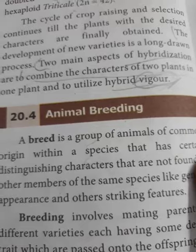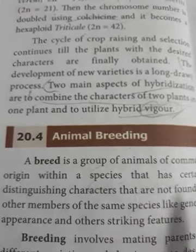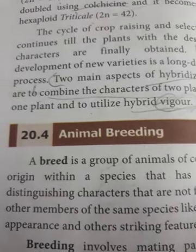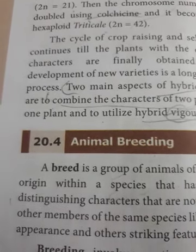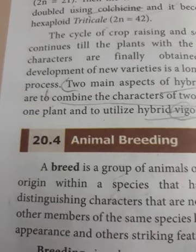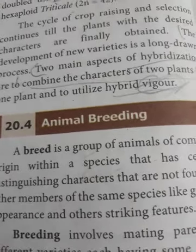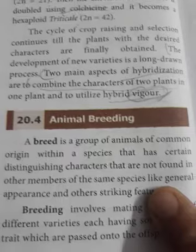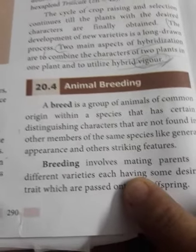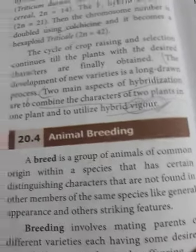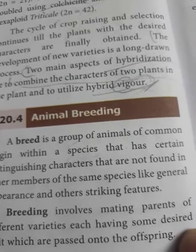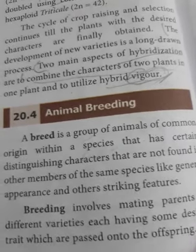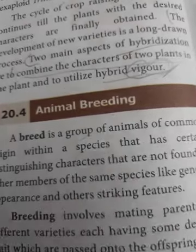Distinguishing characters include general appearance and other striking features. Breeding involves mating parents of different varieties, each having some desired traits which are passed on to the offspring. Mating is essentially cross-fertilization made between parents of different varieties, each having certain desired characters which are passed on to the offspring.